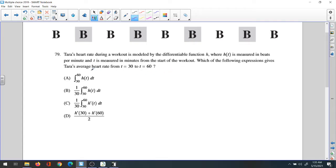They want to find the average heart rate. That means you integrate the function H(T), and it goes from 30 to 60, divided by b minus a, which is 60 minus 30. That's the average.